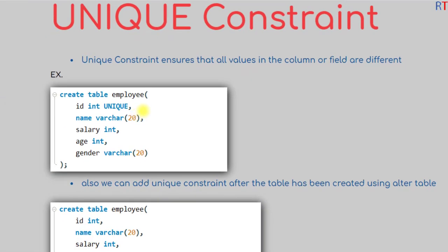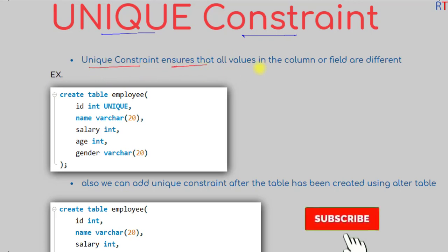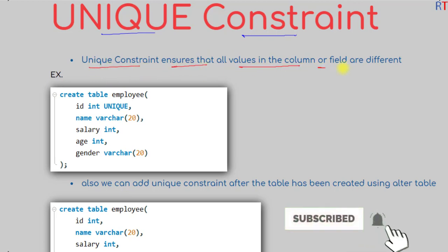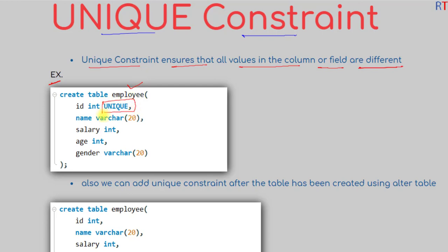In this video we're going to talk about the unique constraint in Structured Query Language. The unique constraint ensures that all values in a column or field are different or unique. For example, inside the employee table we have added the unique constraint to the field ID, meaning the ID field can only allow all different or unique values inside it.